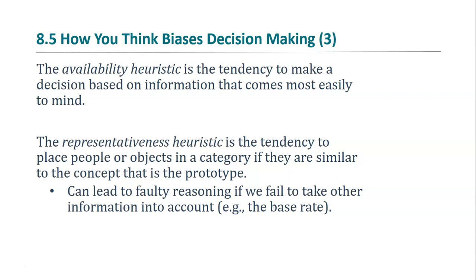The representativeness heuristic is our tendency to place people or objects in a category if they are similar to the prototype. However, this often ignores base rates — the actual rate of a characteristic in the population. Consider a person who is shy, withdrawn, helpful, tidy, meek, and detailed with a passion for order and structure. Is this person more likely to be a librarian or a farmer? The person fits the prototypical librarian, but they are much more likely to be a farmer because in the United States there are over 2 million farmers and only about 150,000 librarians.